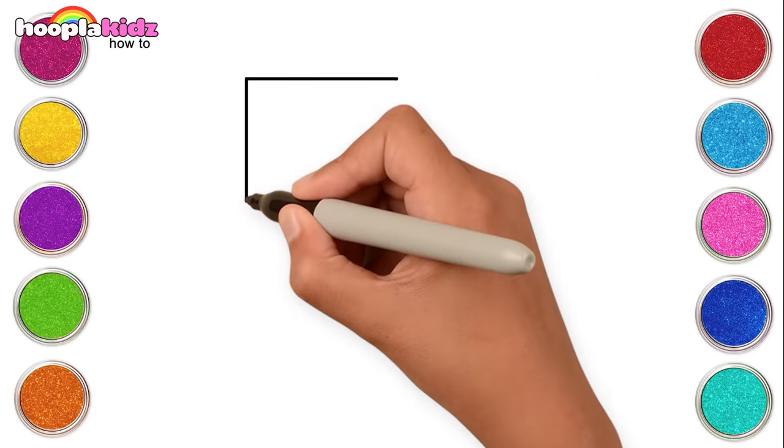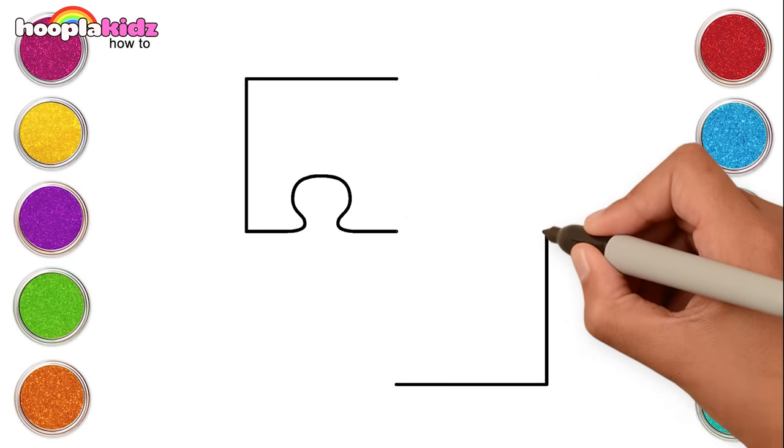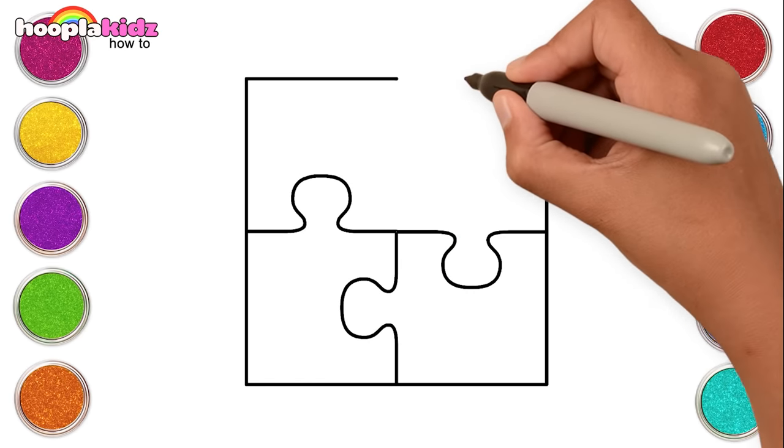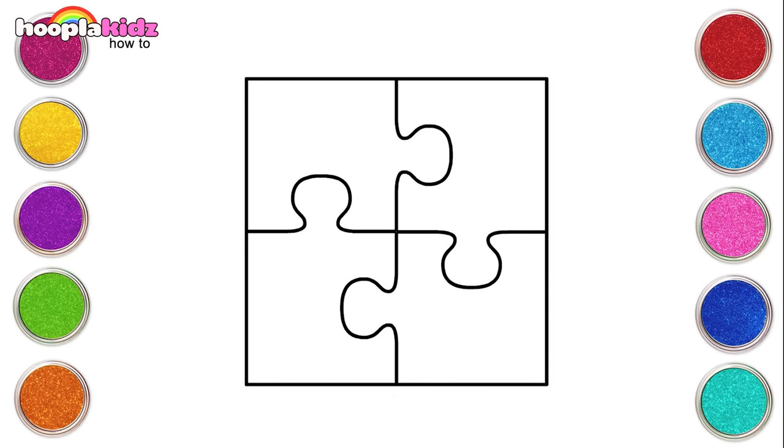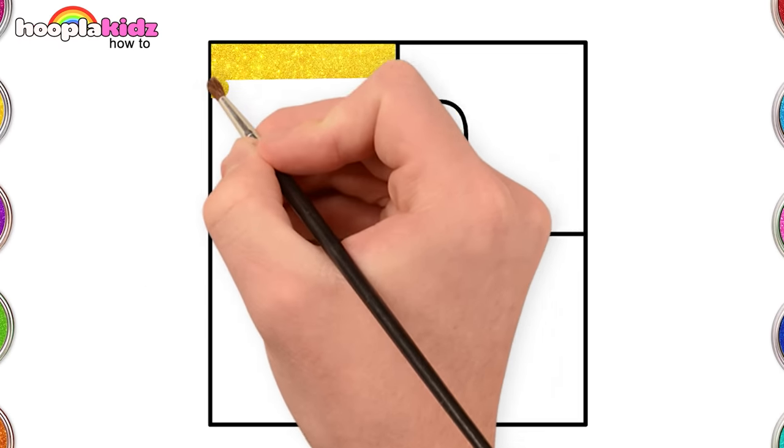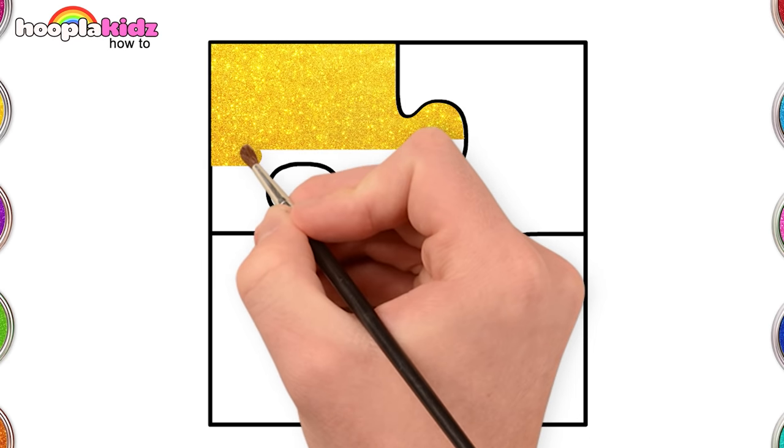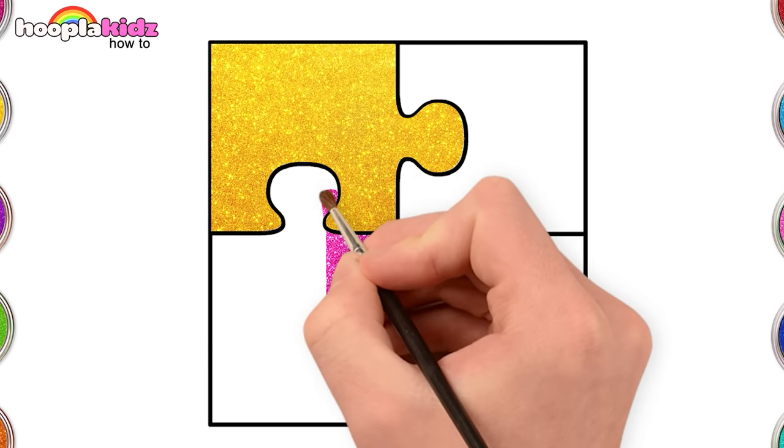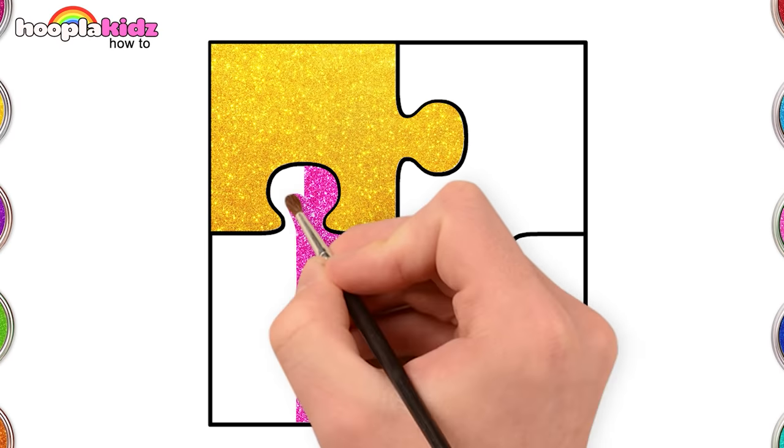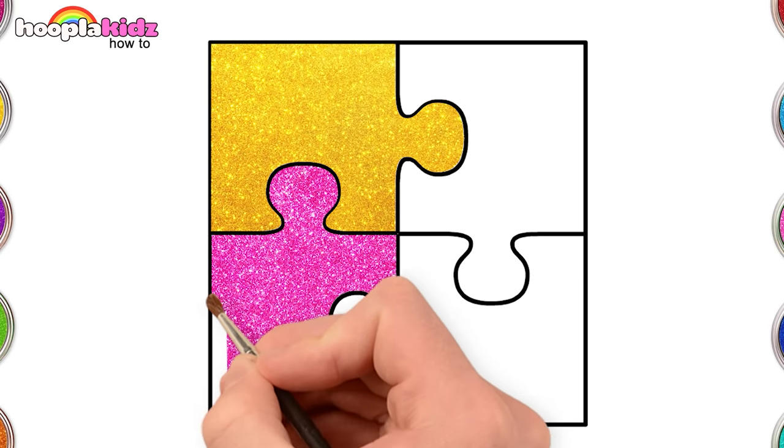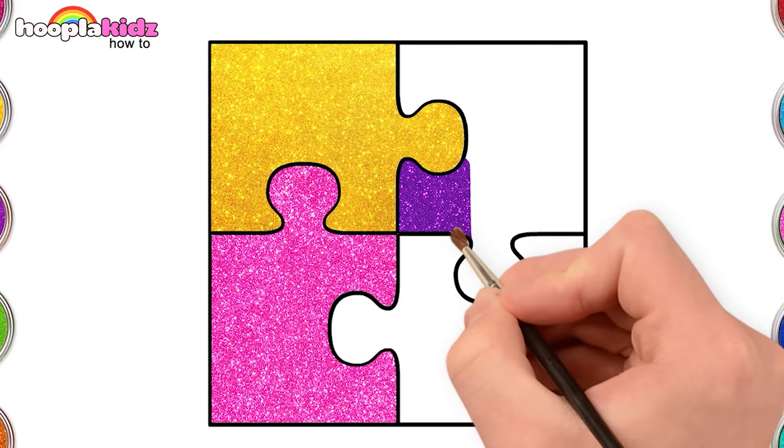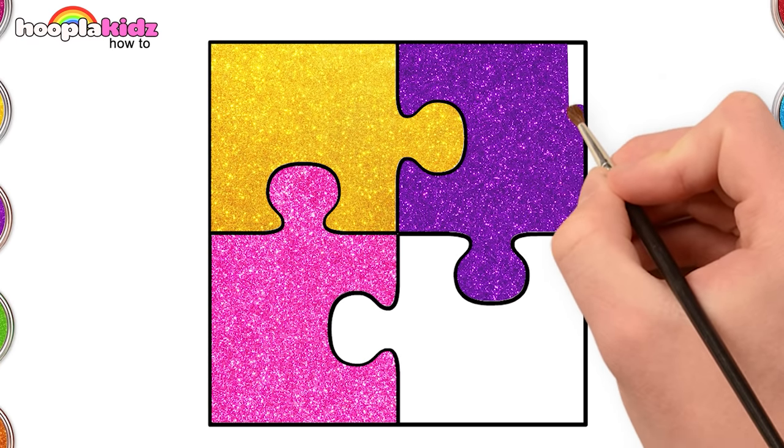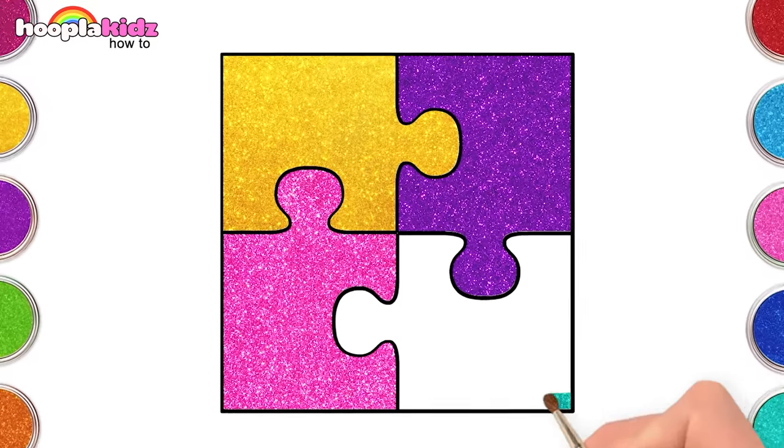Now let's make them in a square. And use yellow, pink, purple, and teal to colour it.